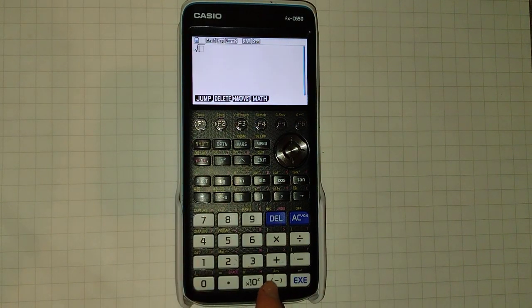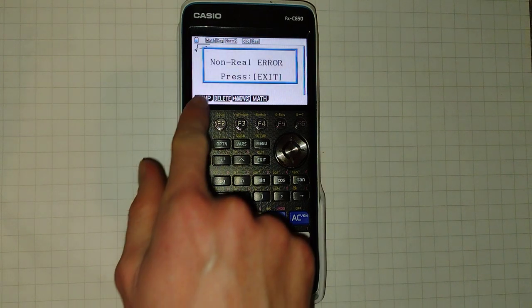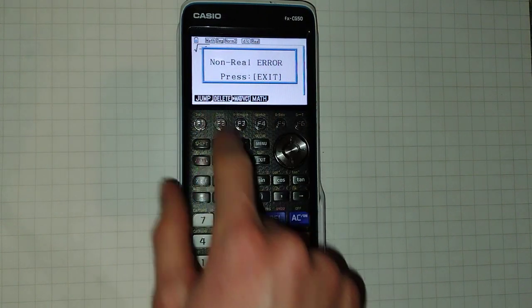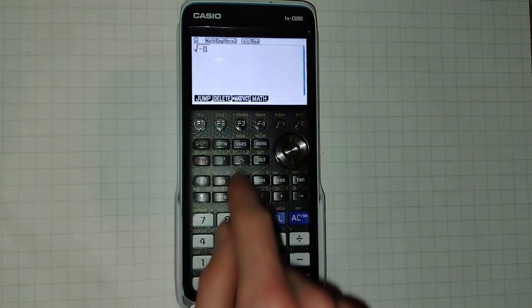The first thing to notice is that by default the calculator is not in complex number mode. Trying to take the square root of negative one will give an error.